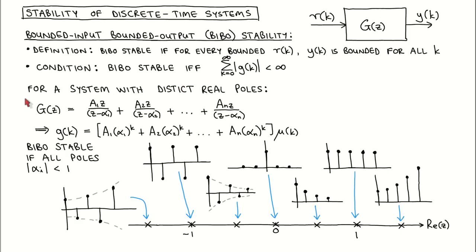For such a system, we can use partial fraction expansion to write the transfer function as the sum of first-order transfer functions, where the poles are given by alpha1 to alpha n.